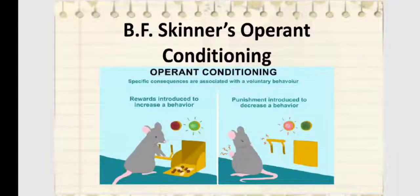And this is the example of behavioral operant conditioning. This is B.F. Skinner's operant conditioning. So specific consequences are associated with the voluntary behavior. When you place a mouse in a box, and you place a button that when it pushes the button, food suddenly comes out, that is the point where it will think that when it pushes that button, food will directly come out. So that is the behavioral operant conditioning.